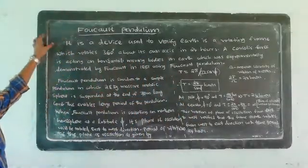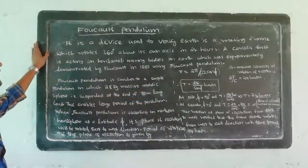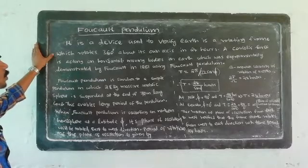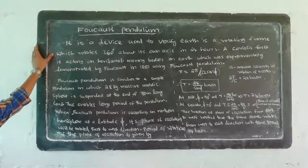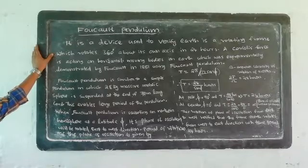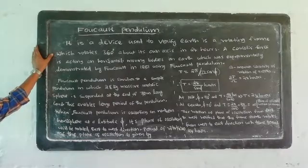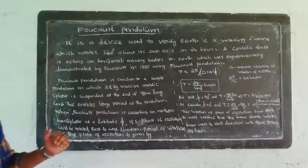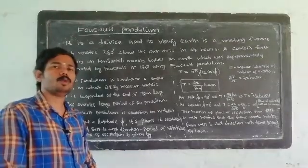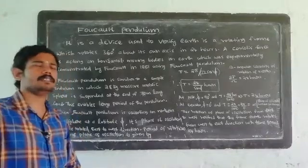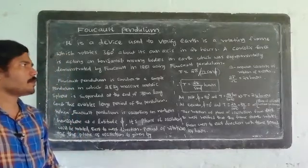It is a device used to verify that the Earth is a rotating frame, which rotates 360 degrees about its own axis in 24 hours. The Foucault pendulum is a device where the pendulum swings at a focal point.